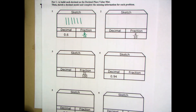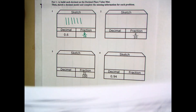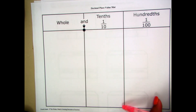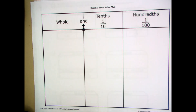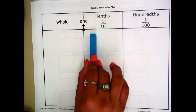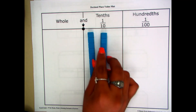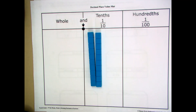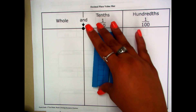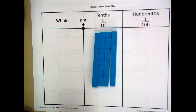I'm going to go ahead and put my decimal place value mat. How many tenths do I need? I need four of them. I'm going to get my rods, which help demonstrate my tenths. So this is one-tenth, two-tenth, three-tenth, four-tenth. Right here is a representation of my four-tenths.